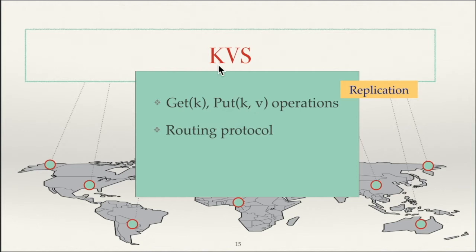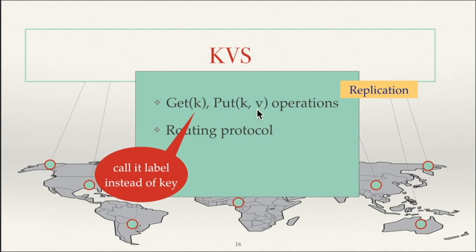Apart from get and put operations, key value stores also support a routing protocol, which is essentially a communication protocol that nodes use to talk to each other. Since nodes are not in one place but spread all over the world, they need to talk to each other using a specific routing protocol. For the rest of my talk, instead of calling these things keys and values, I will call them labels and values, because in cryptography the word 'key' is reserved for cryptographic keys and I do not want to create confusion.